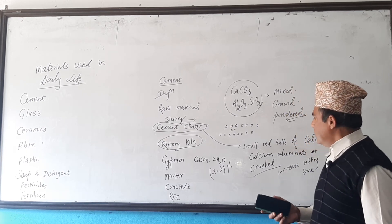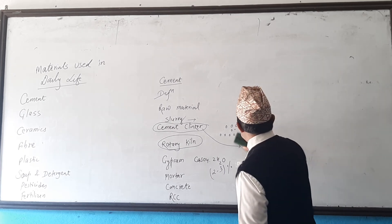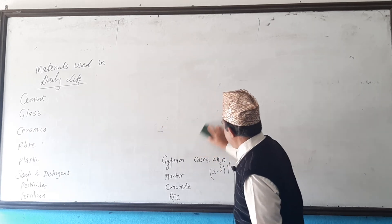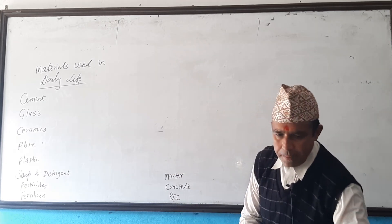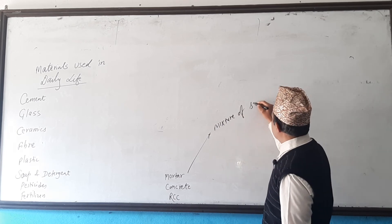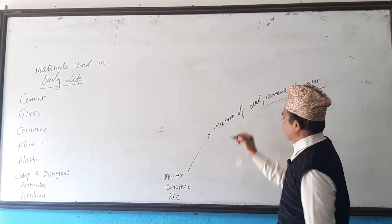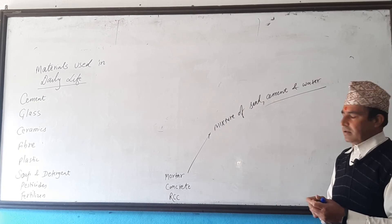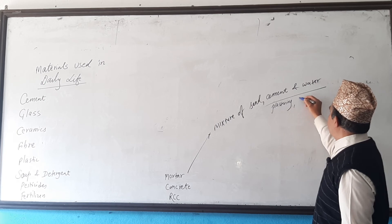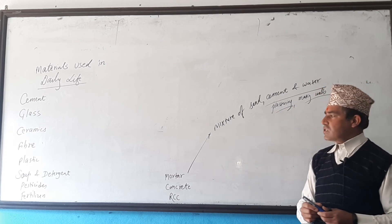There are three more terms: mortar, concrete, and RCC. What is mortar? Mortar is the mixture of sand, cement, and water. Mortar is used for plastering purposes — for making walls and for joining bricks.